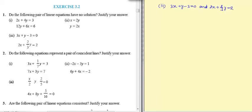Again checking the same thing. a1 by a2 is 3 upon 2. b1 by b2 is 1 upon 2 upon 3, that is 3 by 2. And c1 upon c2 is minus 3 upon minus 2, that is 3 by 2.